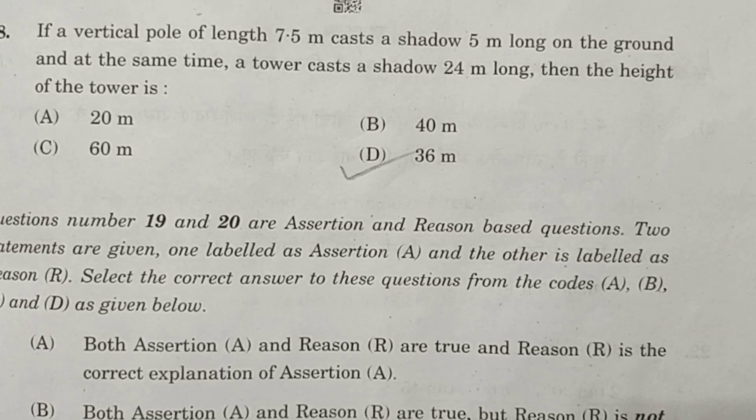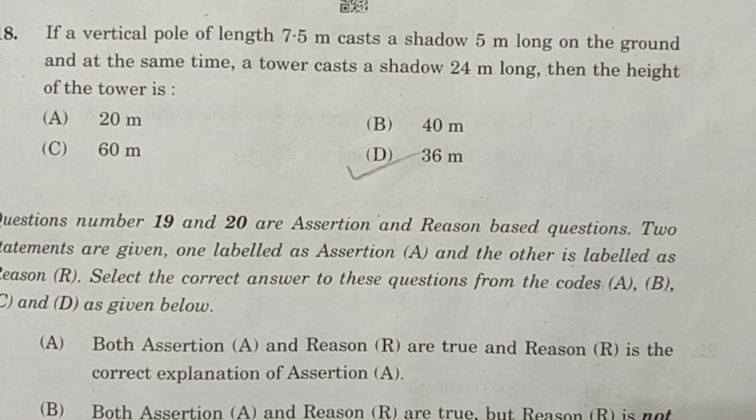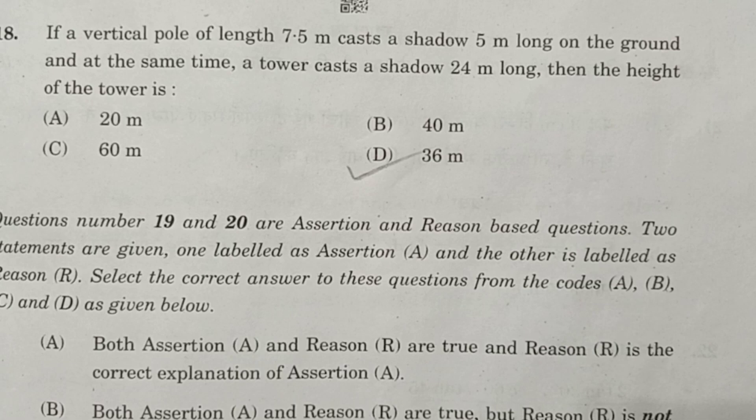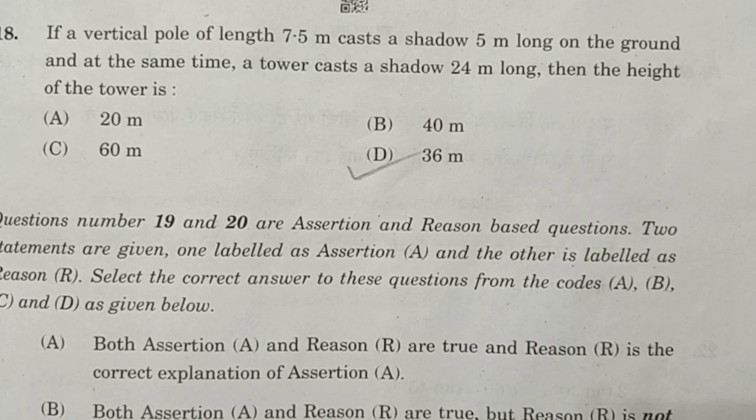Question 16. If a vertical pole of length 7.5 meters casts a shadow 5 meters along the ground, and at the same time a tower casts a shadow of 24 meters long, then the height of the tower is 36 meters.